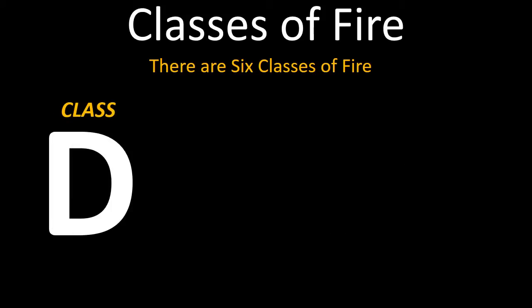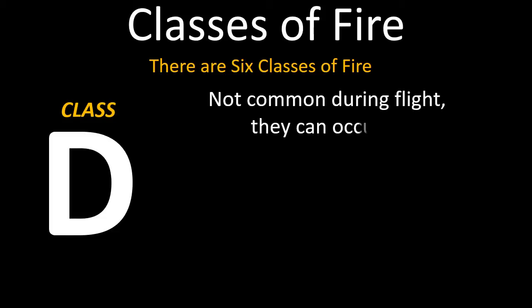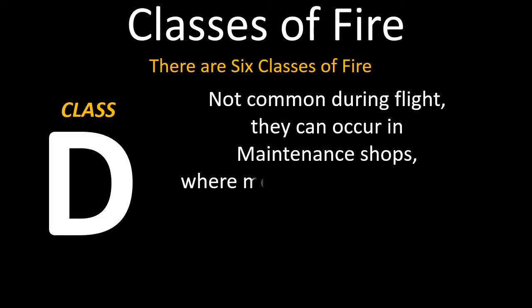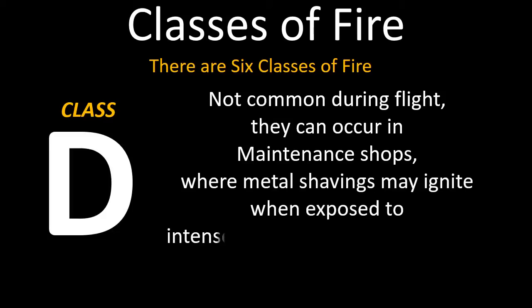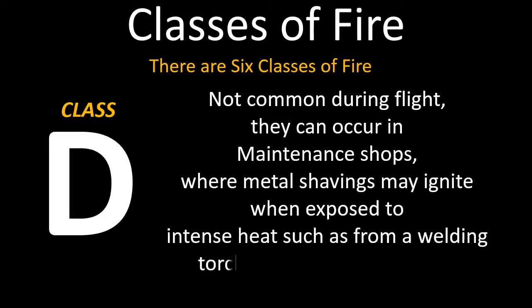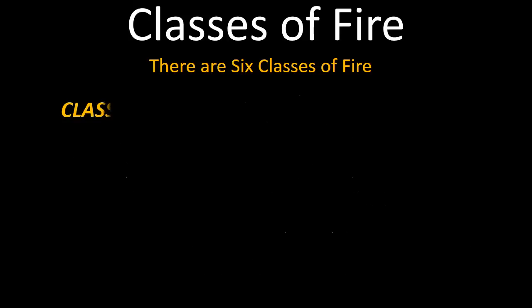Class D fire involves burning metals such as magnesium and are difficult to extinguish. Using the wrong type of extinguishing agent with these may not only be ineffective but may even cause the fire to spread. Although these types of fires are not common in aircraft during flight, they can occur in maintenance shops where metal shavings may ignite when exposed to intense heat, such as from a welding torch or high voltage source.